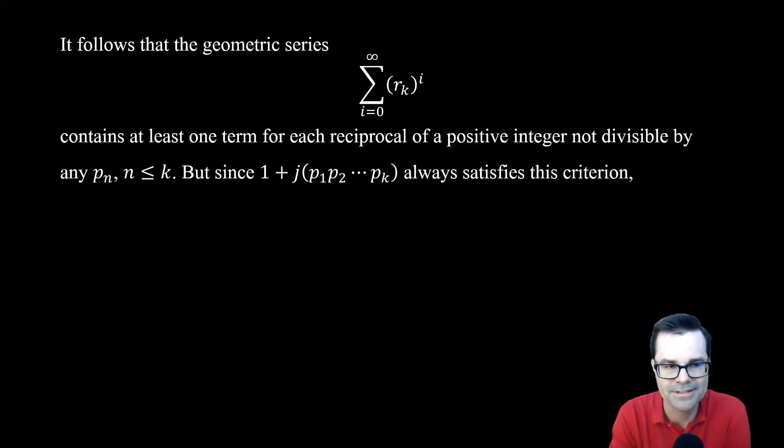So that means they always show up in this expansion. So every term that's 1 over a number that looks like that is going to show up in that geometric series above. And that means that this geometric series has to be bigger than this series, because every term on the right is included somewhere on the left.